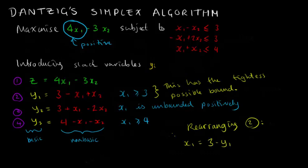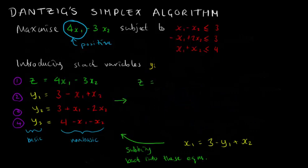We take the appropriate equation and we rearrange it for x sub 1. If we then substitute this value of x sub 1 into the other equations, we get a new set of simultaneous equations.